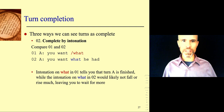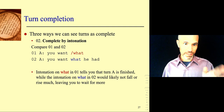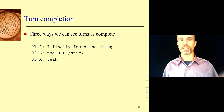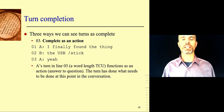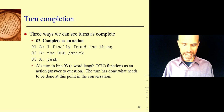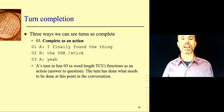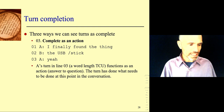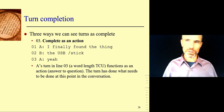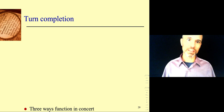Complete by action. Look at what happens in line three. Line two is a question — the USB stick? Line three, A just says yeah. Is that enough at that point? Sure, because as an action, even though it's just one word, it's enough to progress this conversation. It's the action of answering the question. At this point in the conversation, saying yeah makes sense. You can't just say yeah at random points in a conversation or the other person might not get what's going on. These three things — grammar, intonation, and action — are actually all happening at once on each turn. Each turn has grammar, each turn has intonation, each turn has action.